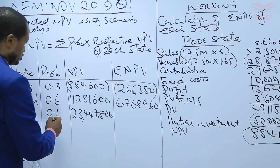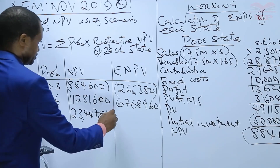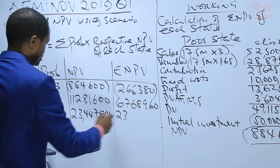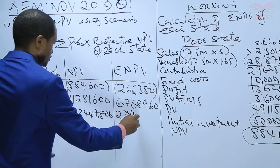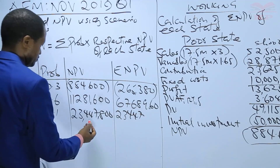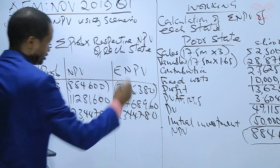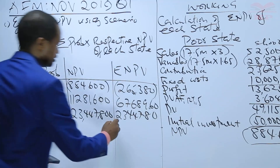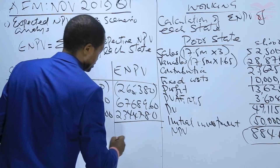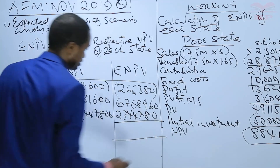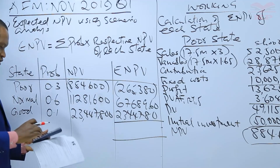Then 0.3 times 23,447,800. Summing these products gives us the expected NPV.